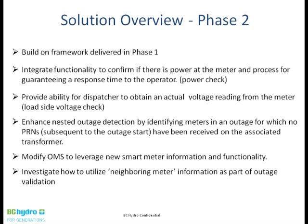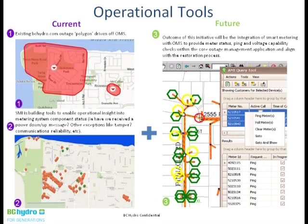If we get outage messages but no restoration notices, we want to understand what's happening in that area — do we want to proactively perform a ping or load-side voltage check? We're building that capability based on individual customers or all meters associated with a particular trouble order. We also look at neighbor meters: if we don't get a message from a particular meter, we check whether the other meters on the same transformer have reported outage or restoration messages to infer status.